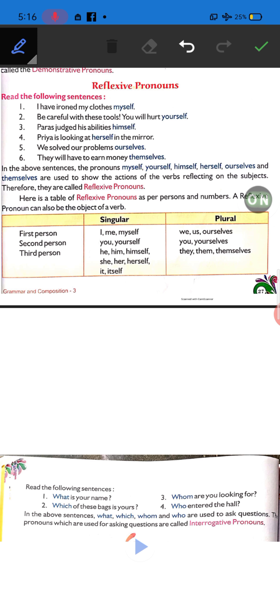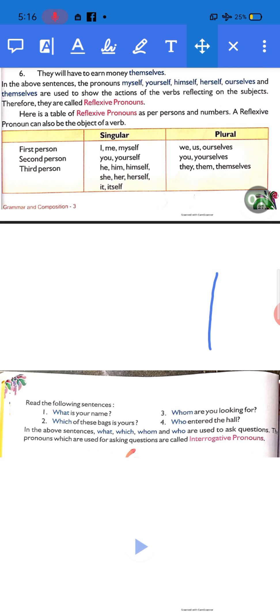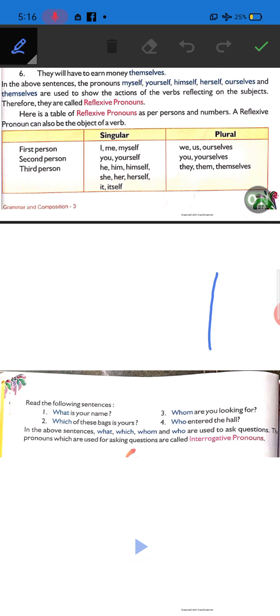Next type is interrogative pronoun. Which words are used to ask some questions - words used to ask questions. For example, we are going to read: first, what is your name? Second, which of these balls is yours? Third, whom are you looking for?